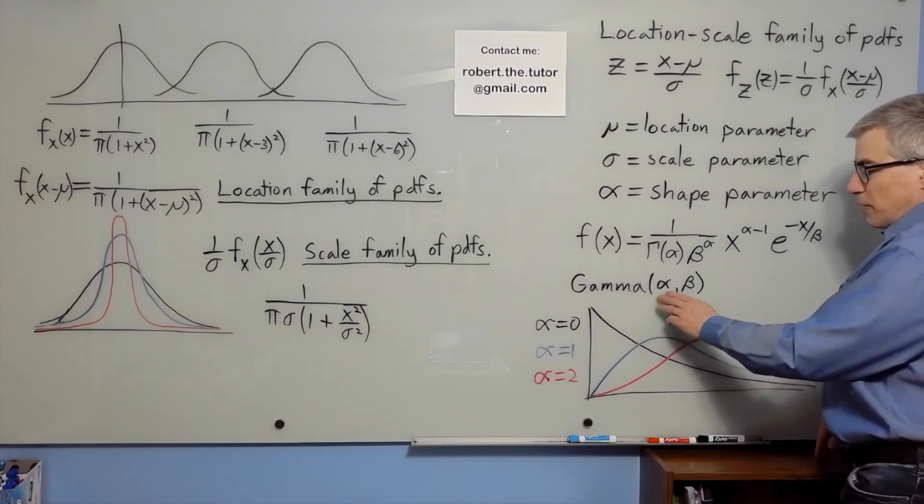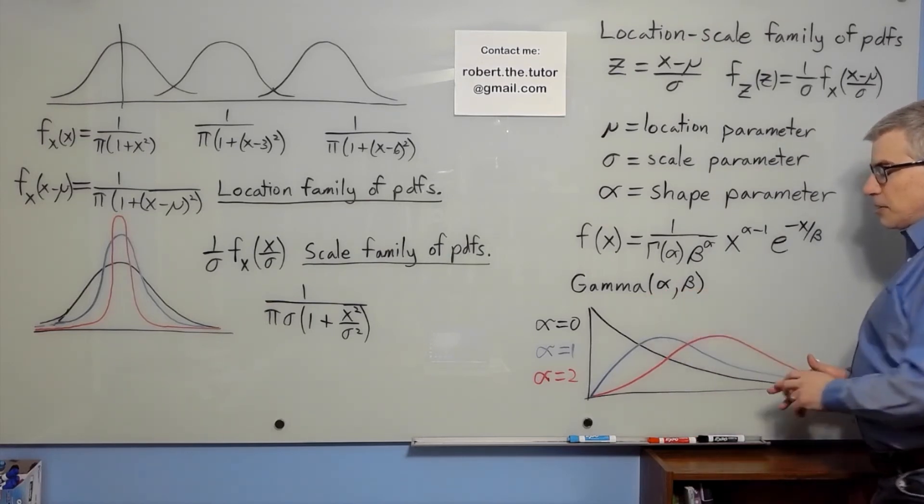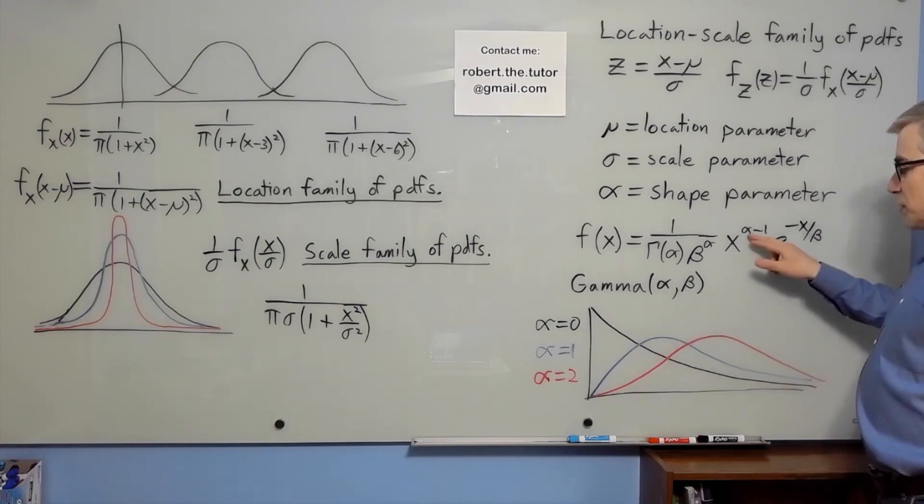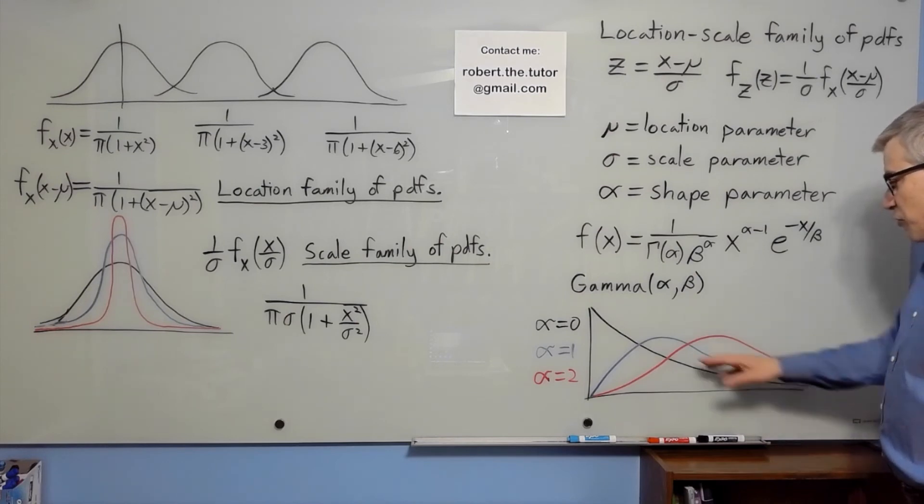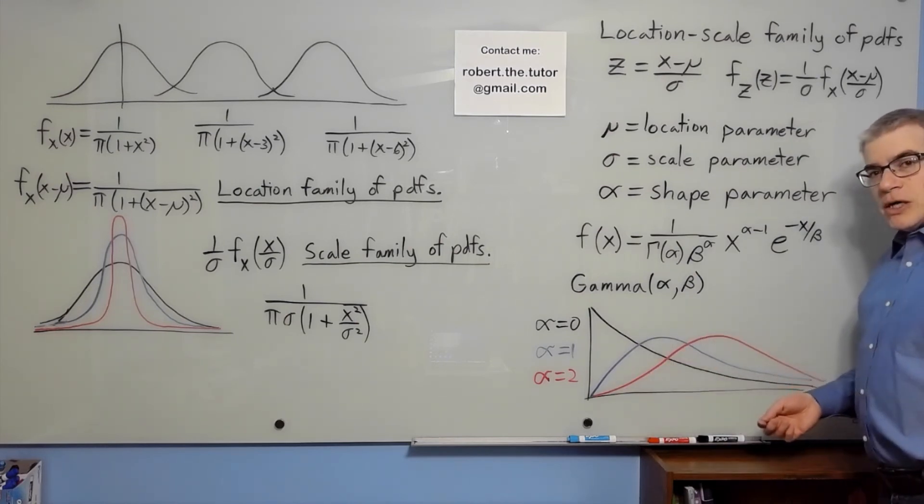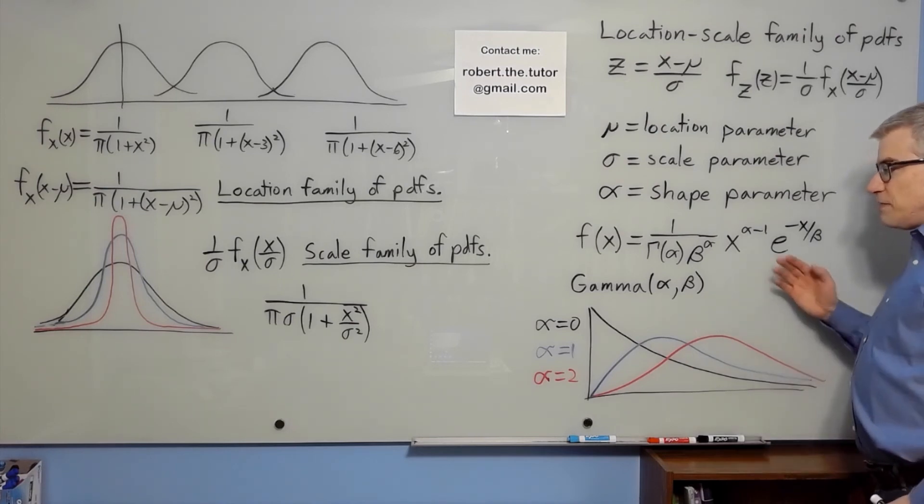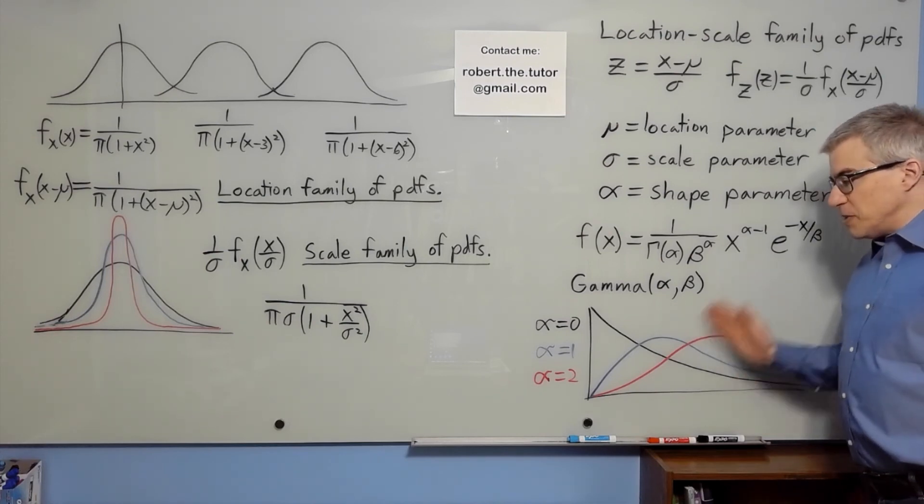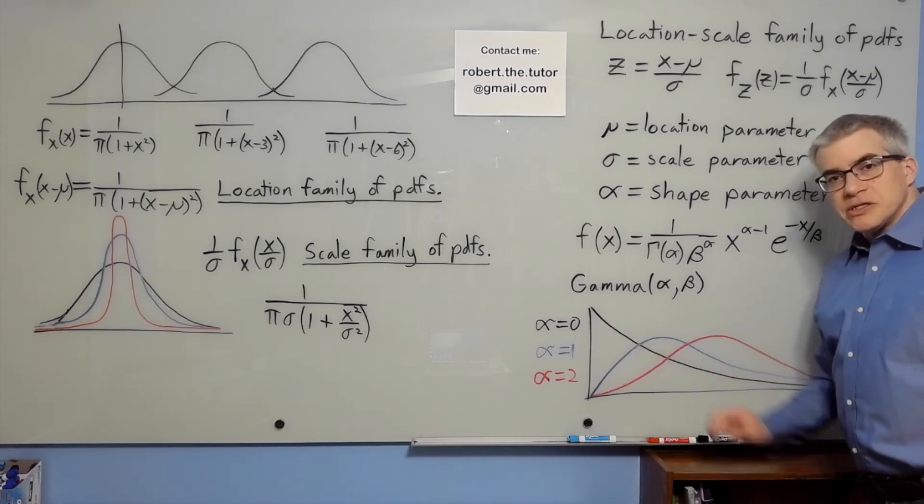See, the gamma distribution has two parameters, alpha and beta. Beta, it turns out, is a scale parameter. What alpha is doing is literally changing the shape from an exponential to this sort of curve to this other curve, and so on. This family of distributions has a scale parameter and a shape parameter. It does not have a location parameter because by design these all start at zero.